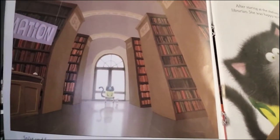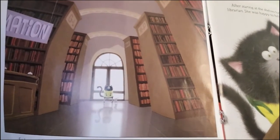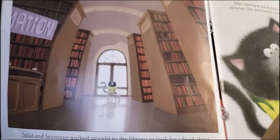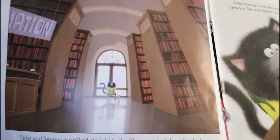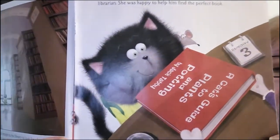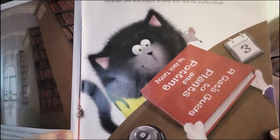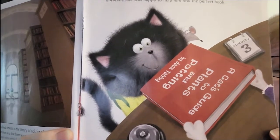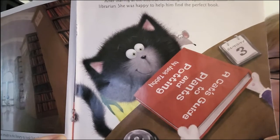Splat and Seymour walked straight to the library to look for a book about gardening. The only problem was there was so much information. Splat wanted to grow one seed, not a whole field of corn. After staring at the shelves for a long time, Splat finally asked the librarian. She was happy to help him find the perfect book, A Cat's Guide to Plants and Potting by Jack Tabby.